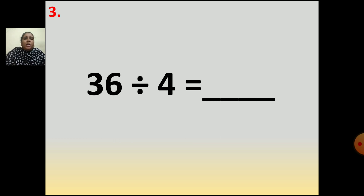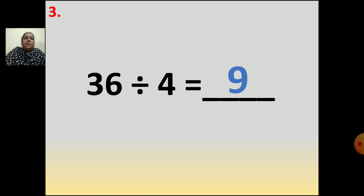So in the table of 4, when you get 36 — 9s are. Your answer is 9. So 36 divided by 4 is equal to 9.